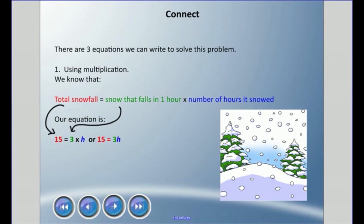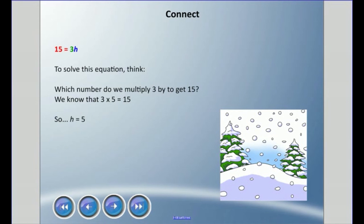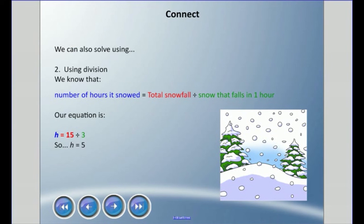15 equals 3H. Remember, we can't write 3 times H because this looks like an X, so we write 3H. We put it right beside the number, and we need to memorize that when I see a number beside a letter, I'm going to multiply. So 15 equals 3H. To solve this equation, I think which number do we multiply 3 by to get 15? We know that 3 times 5 equals 15, so H has got to equal 5.